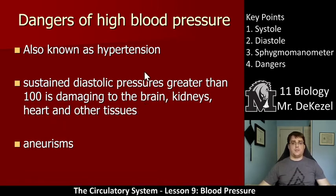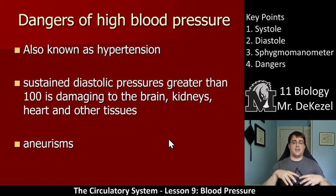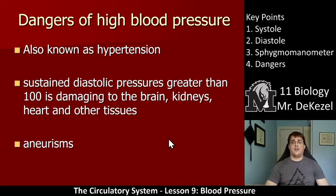There can be some dangers of high blood pressure. We call it hypertension, and low pressure is hypotension. Sustained diastolic pressures greater than 100 can be damaging to the brain as the vessels up there can get leaky. Kidneys can be damaged with pressure, as can the heart and many other tissues. The main concern is aneurysms — a bulging or bursting of an artery — where you can bleed out very fast. If it occurs in the brain, it can cause a lot of damage with sometimes very little chance of recovery.